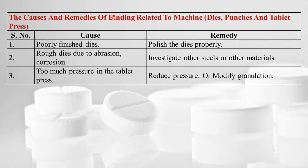Causes and remedies of binding related to the machine: poorly finished dies — polish properly. Rough dies due to abrasion and corrosion — investigate other steel or materials. Too much pressure in the tablet press — reduce the pressure or modify the granulation.